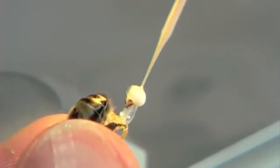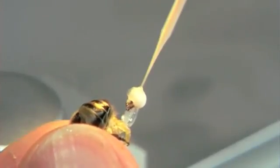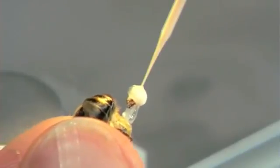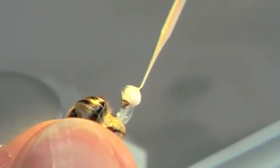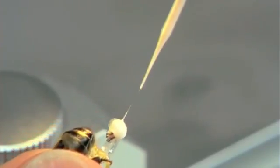Similar to the natural mating process, the semen of several drones is aspirated in portions. A minimum of 8 microliters are required for insemination. This corresponds to the quantity of semen donated by 8 to 10 mature drones.